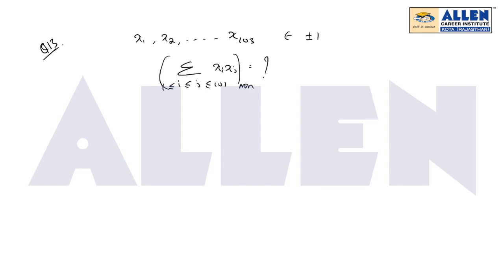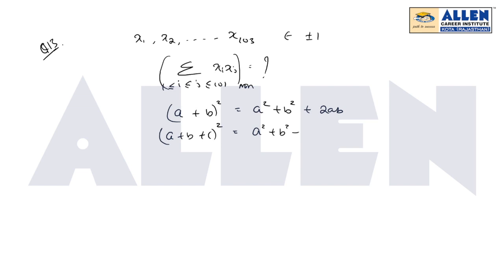Let's start with the basics. If we have two terms a and b, then (a+b)² = a² + b² + 2ab. If we have three terms a, b, and c, then (a+b+c)² = a² + b² + c² + 2(ab + bc + ca). So if you observe the pattern, this equals summation of a² plus twice the summation of ab.